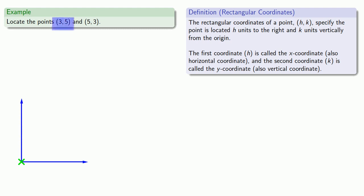So for our first point, we'll start at the origin, go 3 units to the right, and then 5 units upward. For our second point, we'll start at the origin, then we'll go 5 units to the right and 3 units upward.